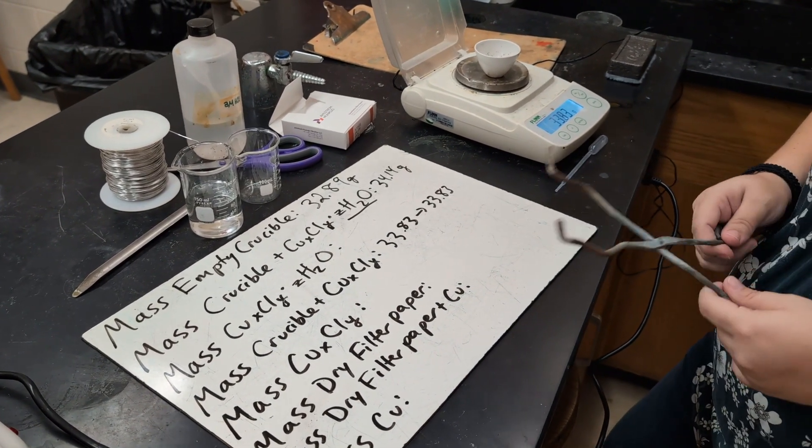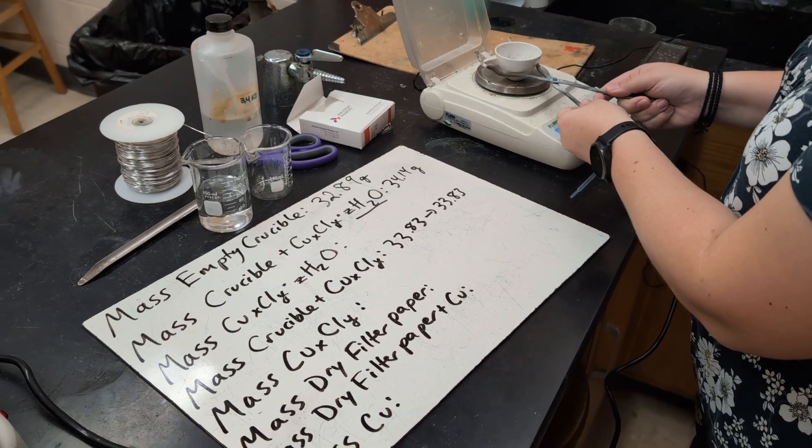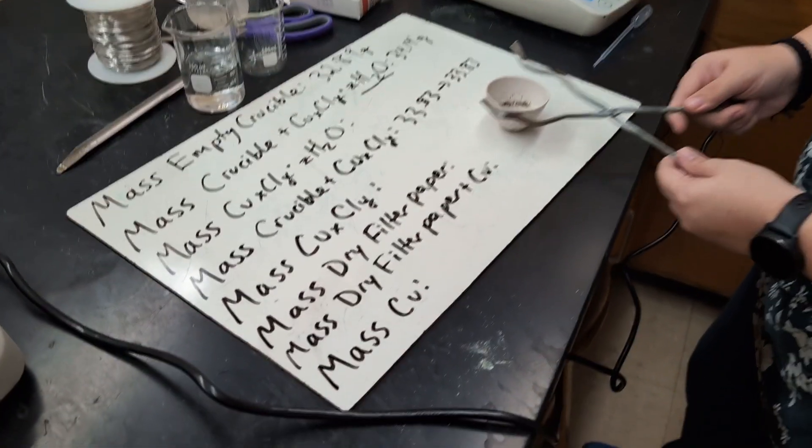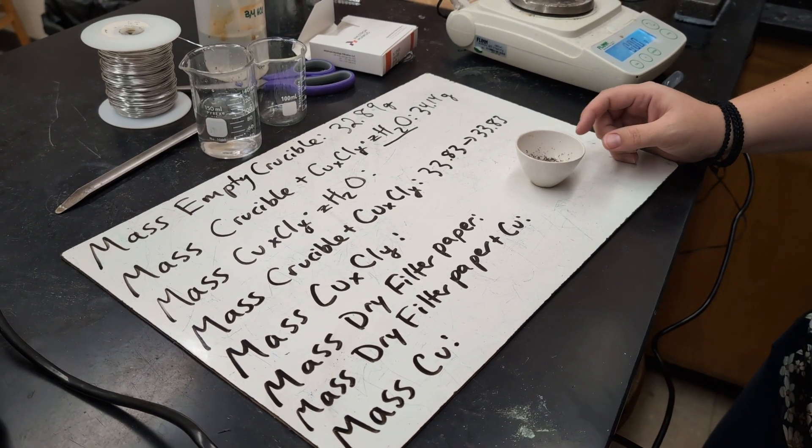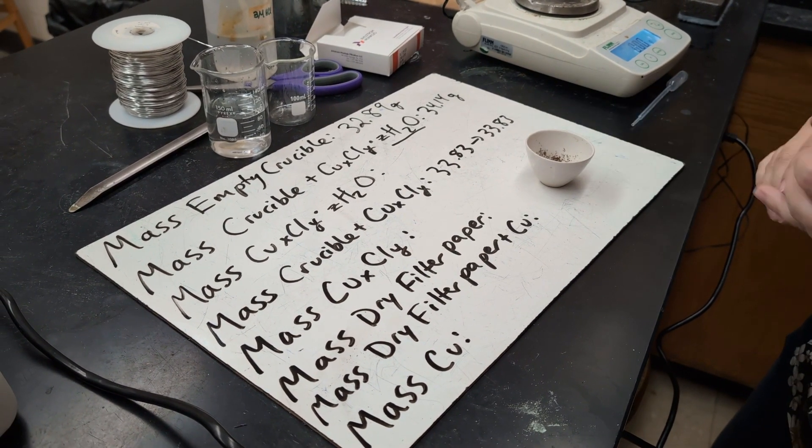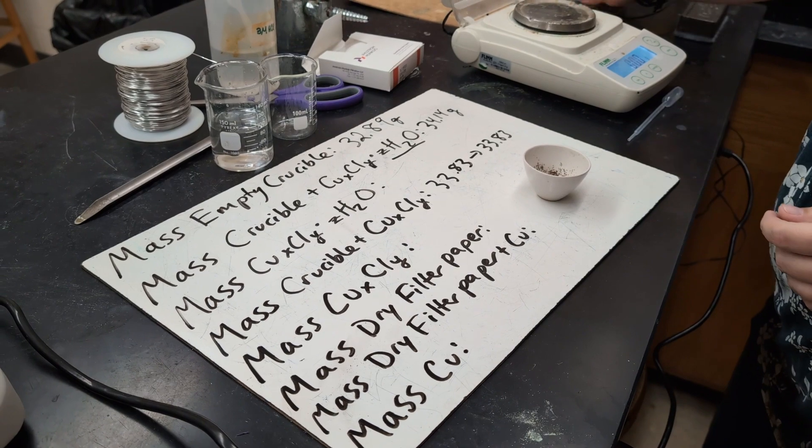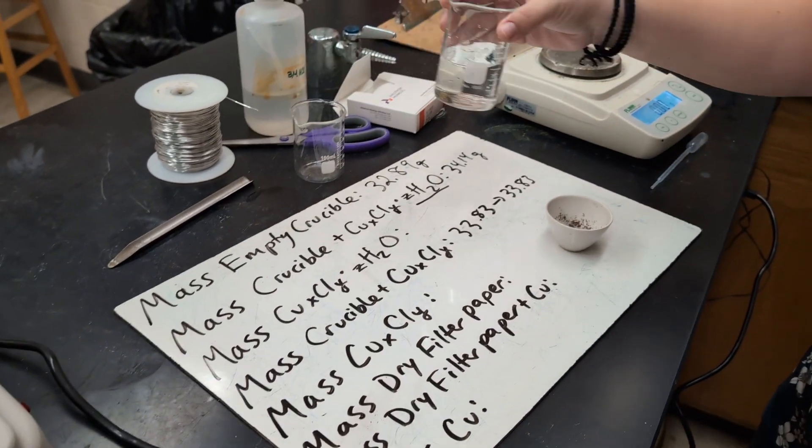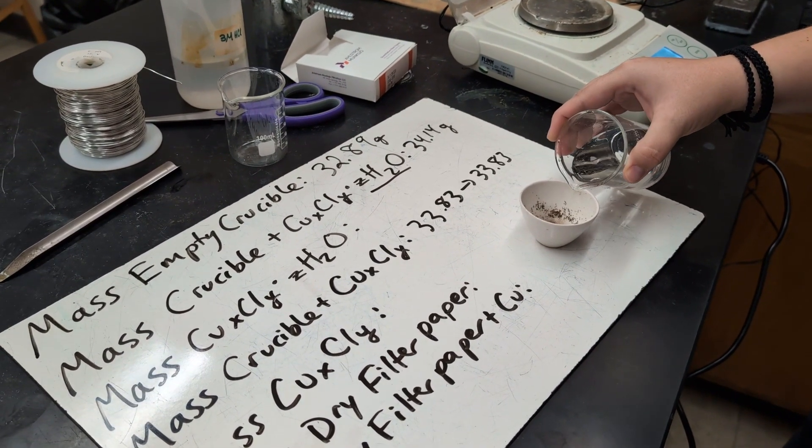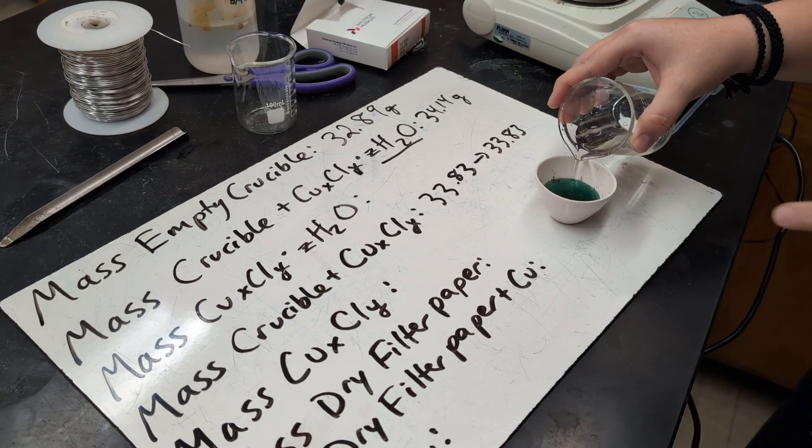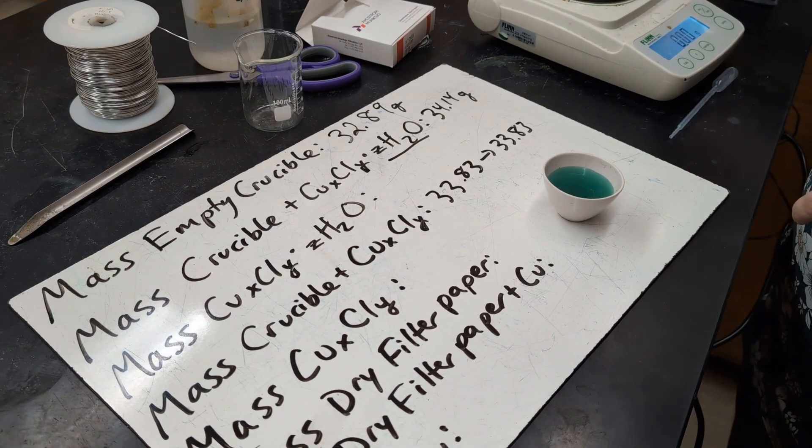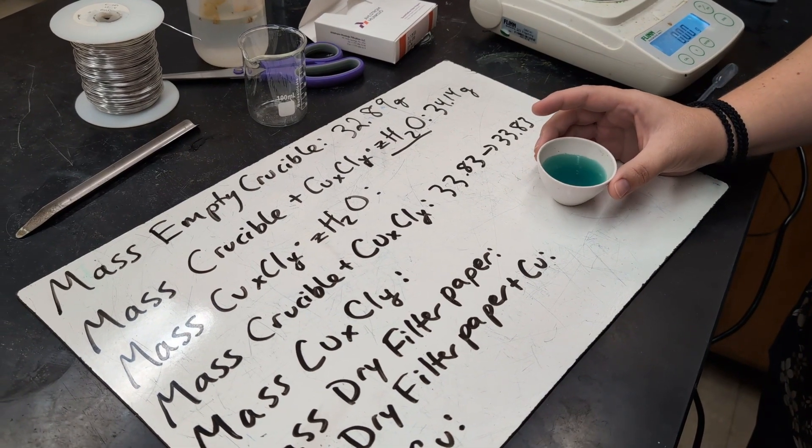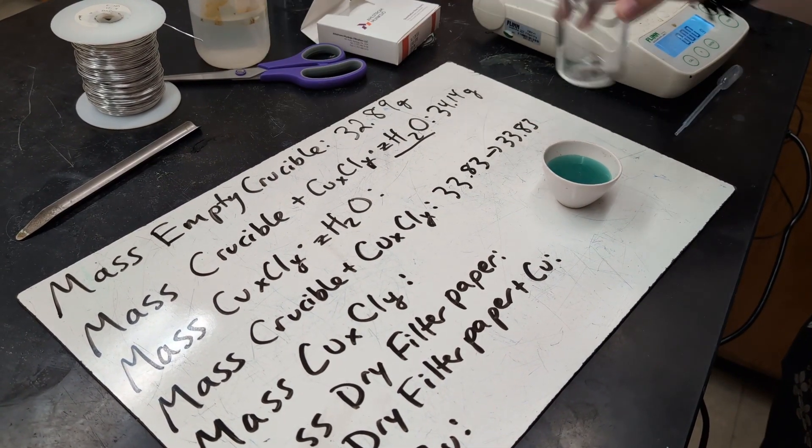So to accomplish that, our next step is to do the reaction. You need to make sure that your crucible is pretty well cooled down so you don't crack it. But then you're going to add some deionized water to the crucible. So I'm going to add that in slowly. It's going to rehydrate and turn back to this bluish-green color. And I'm going to transfer that to another beaker.